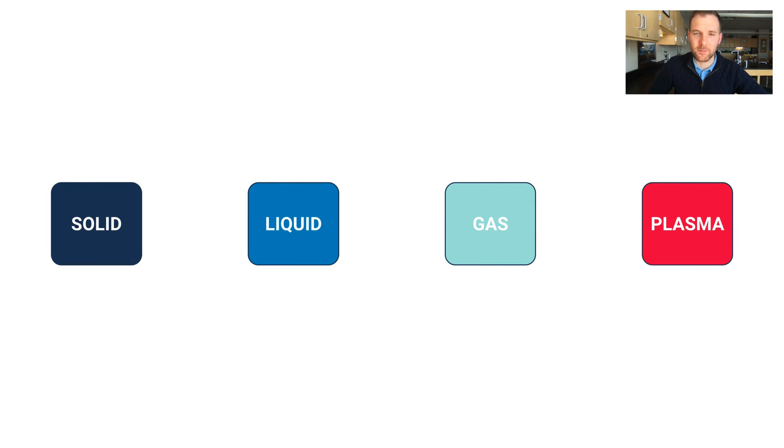Now what happens when we go between these phases of matter? If we go from a solid to a liquid when we're adding heat to a substance, we would call that melting. In chemistry, sometimes that's referred to as fusion. From liquid to gas, we would call that boiling, or in chemistry that's sometimes called vaporization.